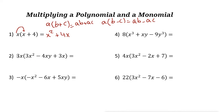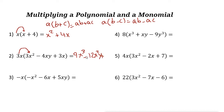Next one: 3x times (3x² minus 4xy plus 3x). To multiply this, start from the first term. 3x times 3x²: 3 times 3 is 9, and x times x² is x³ (1 plus 2 equals 3). Minus: 3x times 4xy gives 3 times 4 is 12, x times x is x squared, and just y. Last term: plus 3x times 3x gives 3 times 3 is 9, and x times x is x squared. So the answer is 9x³ minus 12x²y plus 9x².